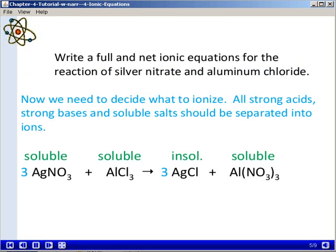Then we need to decide what to ionize. Remember that all strong acids, strong bases, and soluble salts should always be separated into ions. If you look through the substances in this equation you see that three of the four substances are soluble salts. Silver nitrate is soluble as is aluminum chloride and aluminum nitrate.